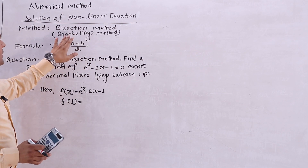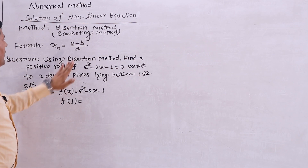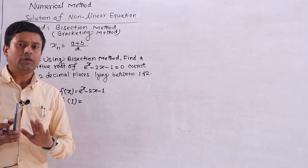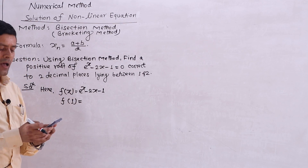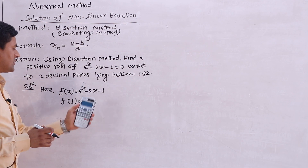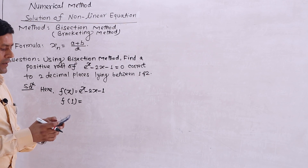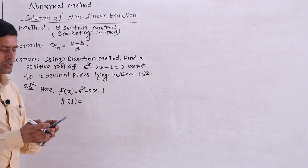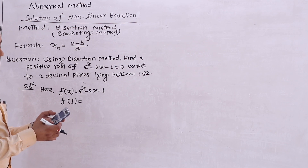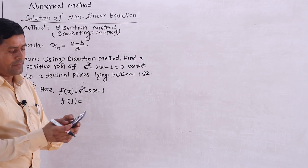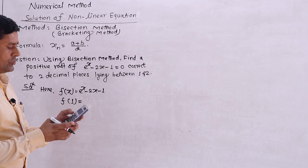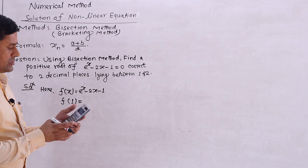I can use the calculator in gradient mode, or the fix mode. For two decimal places, fix to three decimal places. I can use the calculator setting. The equation is e to the power x minus 2x minus 1. I will enter: Shift, ln, alpha x, minus 2, alpha x, minus 1.